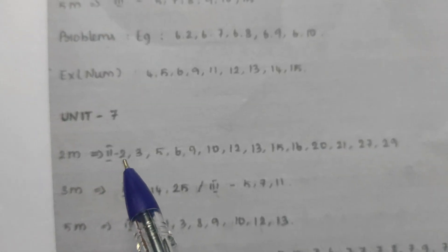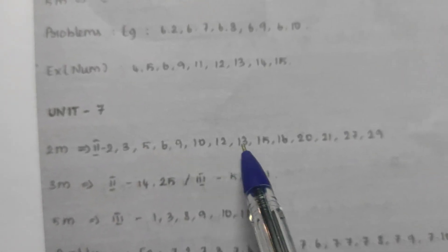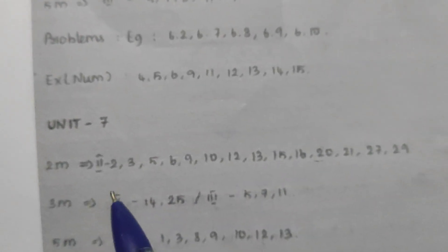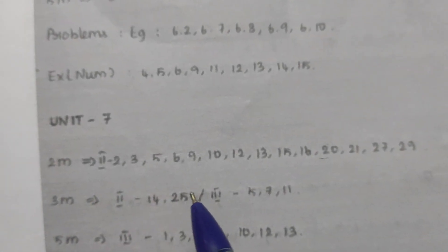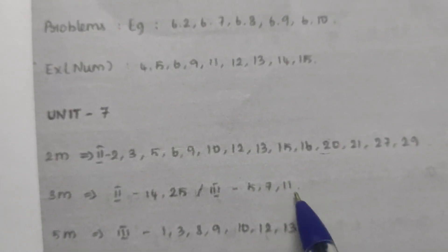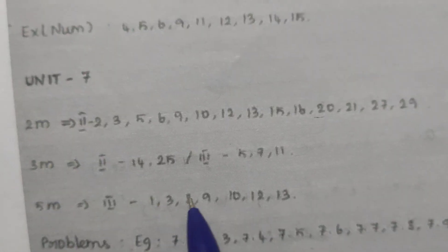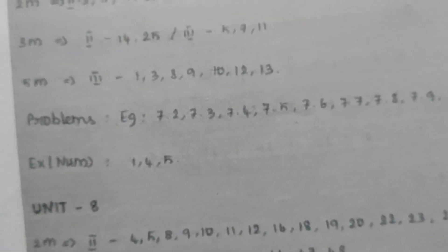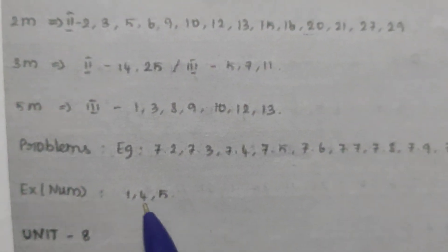Unit 7: 2-mark questions — 2, 3, 5, 6, 7, 9, 10, 12, 13, 15, 16, 20, 21, 22, 29. 3-mark questions — 14, 25, 23; also 5, 9, 11; 3, 8, 9, 11; 10, 12, 13. Problems: 7.2, 7.3, 7.4, 7.5, 7.6, 7.7, 7.8, 7.9, 7.10, 7.11, 7.13. Exercise: 1, 4, 5.